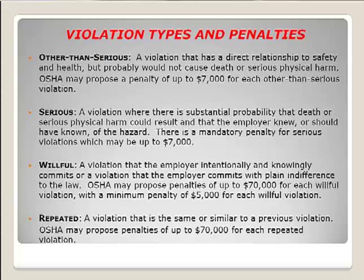A willful violation means the employer intentionally commits a violation — they knew, they were trained, but for whatever reason chose not to implement the protective system. Penalties can be up to $70,000 for each willful violation, with a minimum penalty of $5,000. The most common type in the crane and rigging world involves documentation of inspections: if we have a documented deficiency but are still using the equipment, that could be a willful violation. A repeated violation — the same or similar to a previous violation throughout the company — also carries penalties up to $70,000.